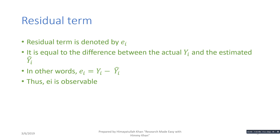If we substitute the explanatory variables into the regression equation, we can get y_i-hat for all observations. Then if we take the difference between the original, actual, or observed y_i and the predicted or estimated y_i-hat, we get e_i. In that way, e_i is observable.